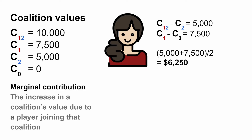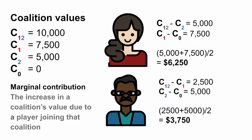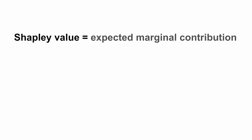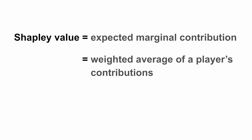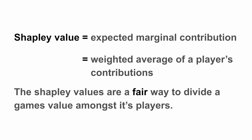These are the marginal contributions of player one. To calculate the expected marginal contribution, we take the weighted average of these values, which gives us six thousand two hundred and fifty dollars. We can follow a similar process to calculate the expected marginal contribution of player two — in this case we get three thousand seven hundred and fifty dollars. Notice how the two values add up to the original prize money of ten thousand dollars. In fact, these two values are Shapley values. So in a game, the Shapley value of a player is the expected marginal contribution — the weighted average of a player's contribution to all the coalitions that player could join.